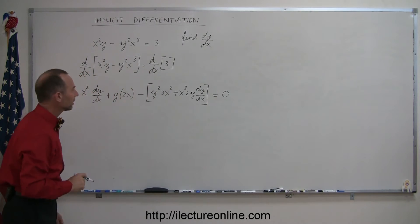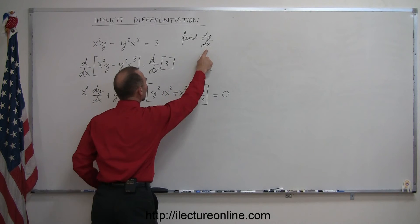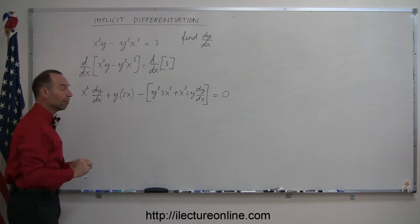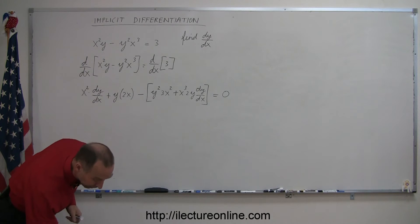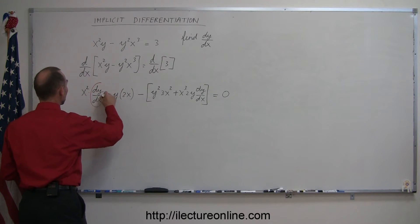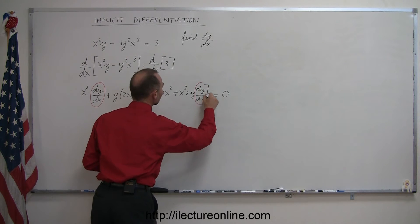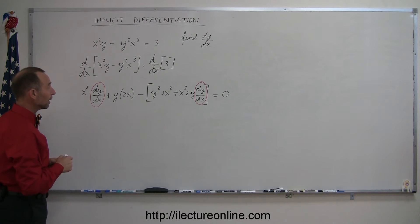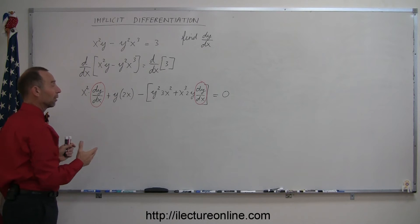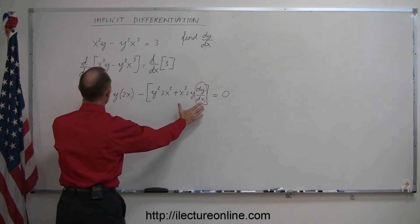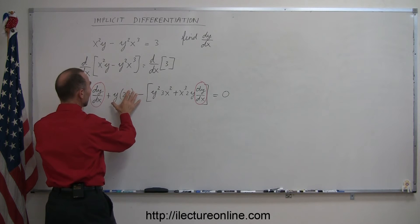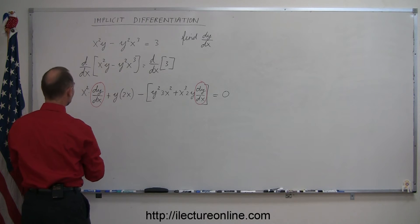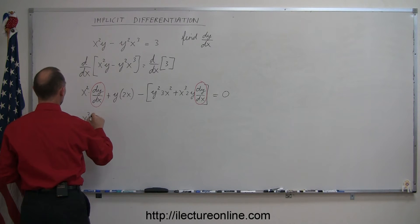Here's where things are a little different now. Since we're looking for dy/dx, we have to algebraically solve this for dy/dx. Notice there's a dy/dx over here and a dy/dx over here. So algebraically we have to isolate the dy/dx. One way to do that is to put all terms that have a dy/dx on the left side, and all terms that do not have a dy/dx on the right side. So we have x squared times dy/dx — we'll leave that on the left side.